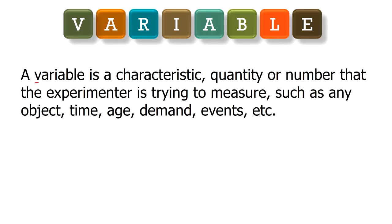A variable is a characteristic, quantity or a number that the experimenter is trying to measure, such as any object, time, age, demand, events, etc. Basically a variable is termed as variable because its value may differ or vary between the data units in a population, and its value changes over time.